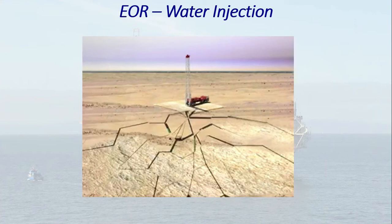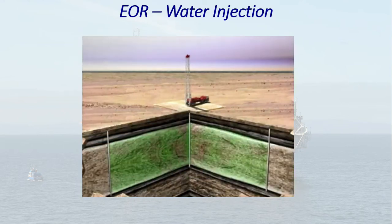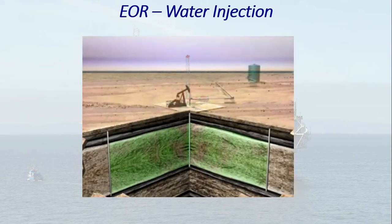This is a graphical explanation and once the video starts I will try to explain. The green color portion denotes the hydrocarbons which are present in the well.